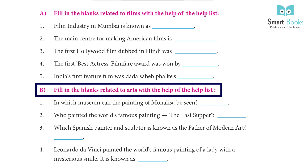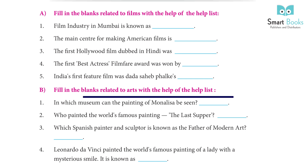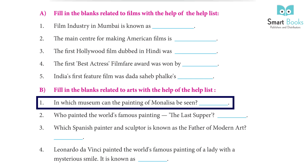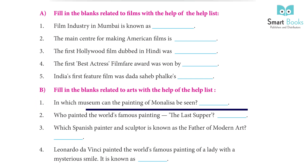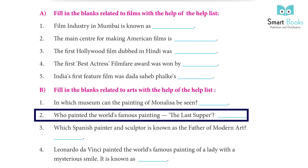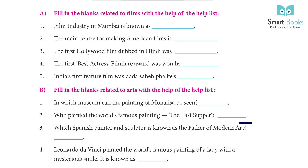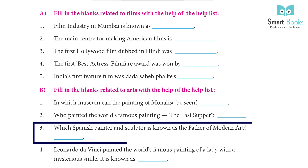Fill in the blanks related to arts with the help of the word list. 1. The painting of Mona Lisa can be seen in the Louvre museum in Paris. 2. The world-famous painting The Last Supper was painted by Leonardo da Vinci. 3. The Spanish painter and sculptor known as the father of modern art is Pablo Picasso.